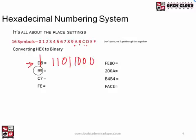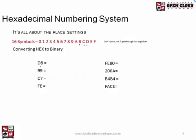Let's do 99 hex. 9 in binary is 1001 — that's 8 plus 1. Another 9 is 1001. So hex 99 converts to binary 10011001. Now let's do C7. C is 12, which is 8 plus 4, so C is 1100. Then 7 is 0111. So we just converted C7 to binary: 11000111.